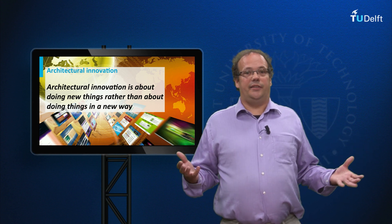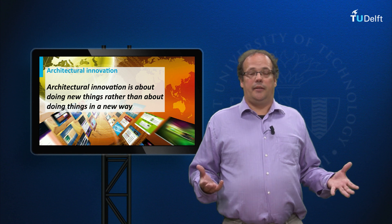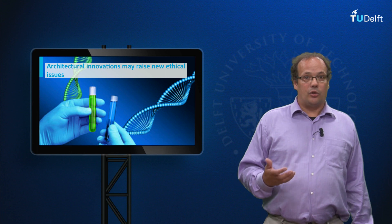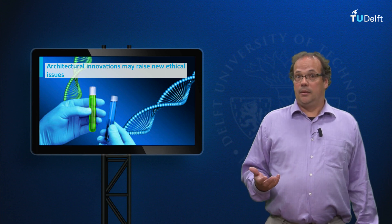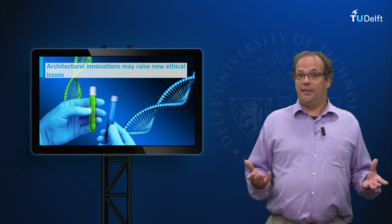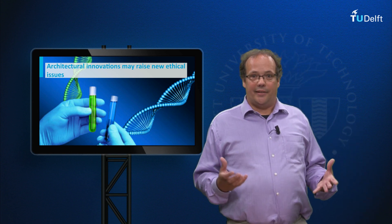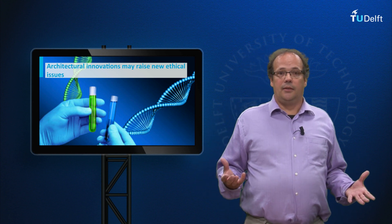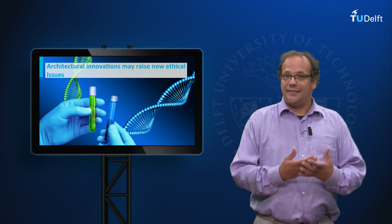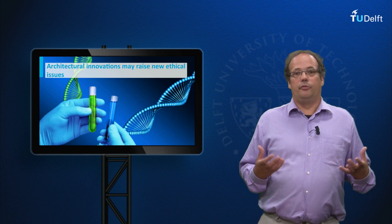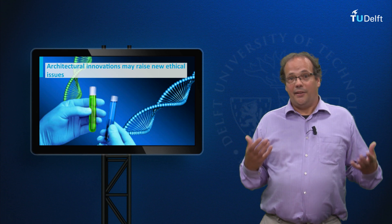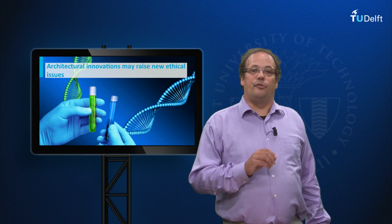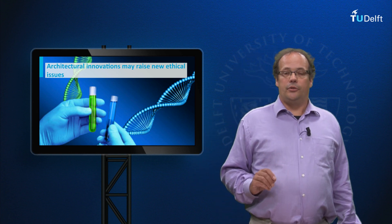Think of the privacy issues raised by the internet. Or think of phenotype diagnostic techniques — suddenly we can predict how likely it is that a child will have a certain disease, a disease that perhaps cannot be cured. This raises completely new ethical issues for parents: what should they do? Should they consider an abortion? For existing technologies there are often established habits and rules. In the case of incremental innovation, these rules and habits are usually still adequate, but in the case of radical innovation, they are often no longer sufficient.